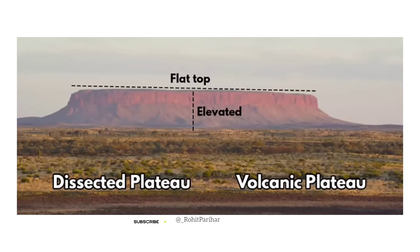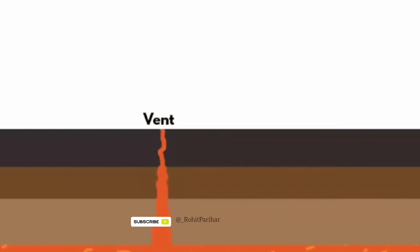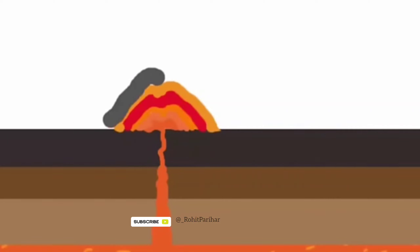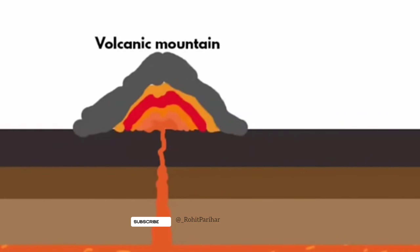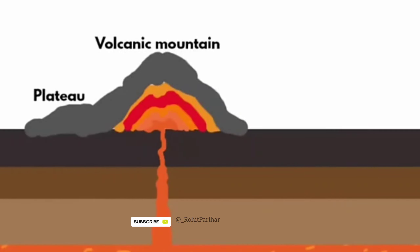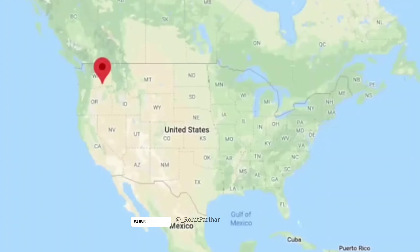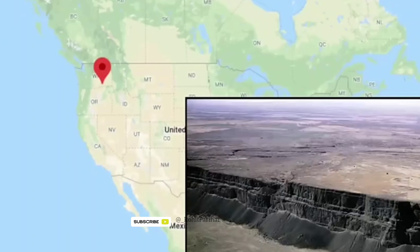The second type is Volcanic Plateaus. They are formed by small volcanic eruptions that slowly build up over time, forming a plateau. Lava continuously flows out of a volcano, and with time, lava gets accumulated in the form of layers — and that's how volcanic plateaus are formed.